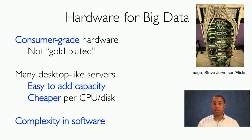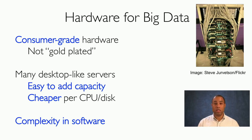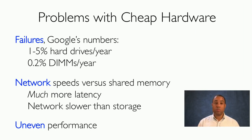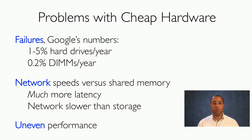The alternative we use for big data today is consumer-grade hardware — not gold-plated servers but more desktop-like machines. These are very easy to add in terms of capacity and much cheaper per CPU and disk than traditional servers, but they're not as reliable and much harder to manage. The trade-off is we handle this complexity in software. Problems with cheap hardware include failures: Google's numbers show one to five percent of hard drives are lost every year, and 0.2 percent of memory chips per year. Also, network speeds are much slower than the shared memory speeds found in big-box 1990s solutions.